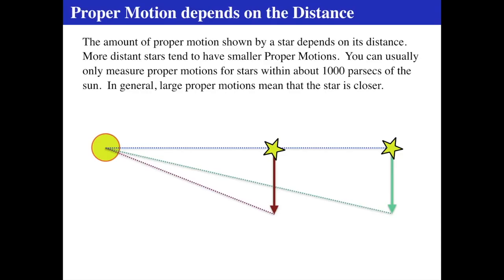Proper motion is an angular change per year — not a velocity. Two stars at different distances can have the same actual speed but different angular changes depending on distance. And if a star is moving directly towards us, we won't see any proper motion at all. The radial velocity tells us how fast a star is moving towards or away from us, and we get that from the spectrum. As a star moves towards you, its absorption lines shift to shorter wavelengths — a blue shift. Moving away causes a red shift.